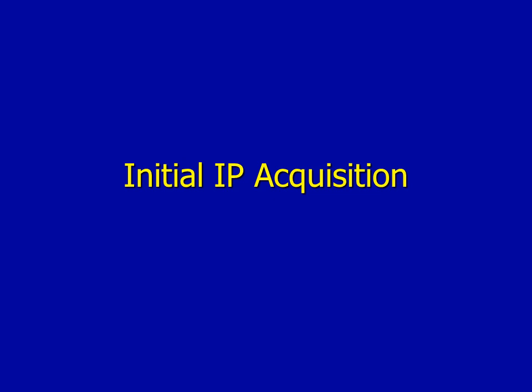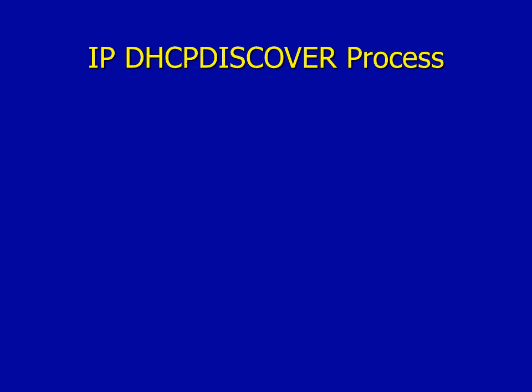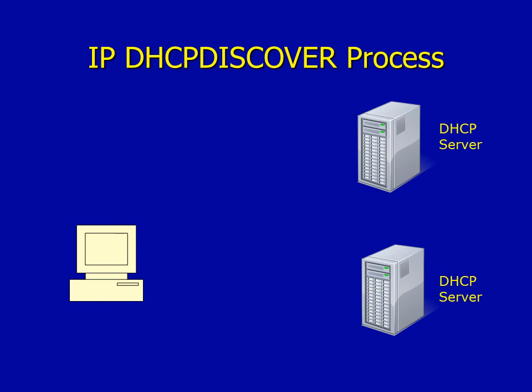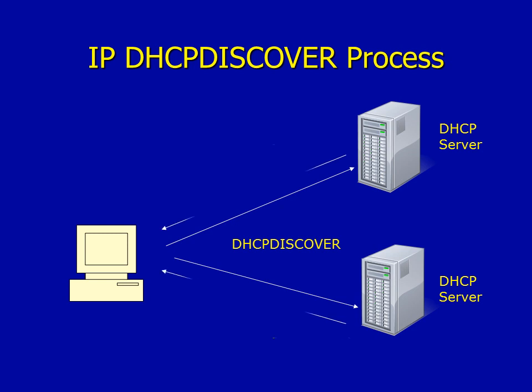Let's first look at the initial IP address acquisition. We've got a standard environment here with a DHCP client on the left-hand side and two DHCP servers on the right. Initially, the DHCP client sends out a DHCP Discover, which is sent as a broadcast message to all the DHCP servers on the network. In this case we've got two, and those two DHCP servers reply.